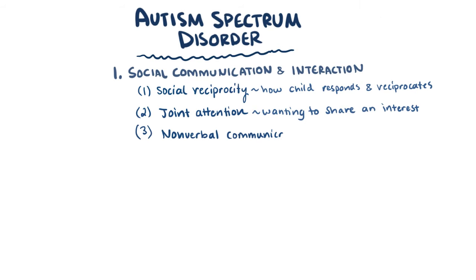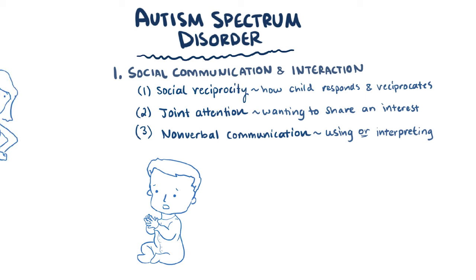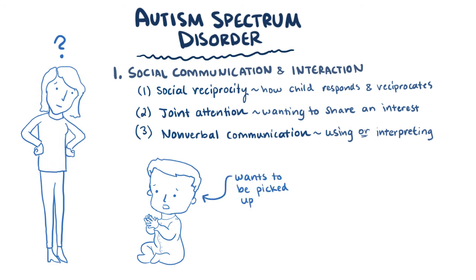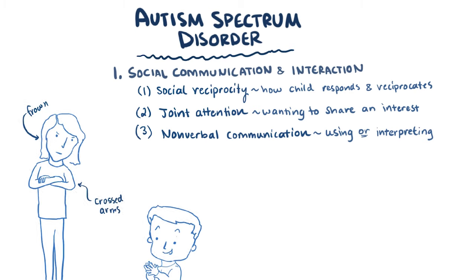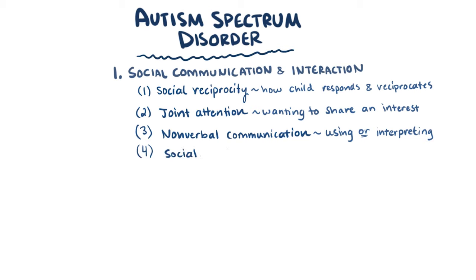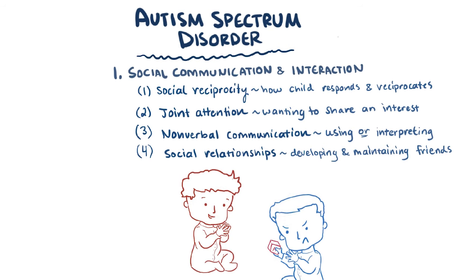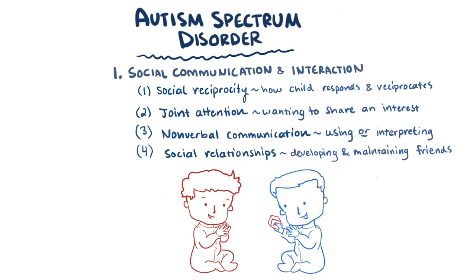Next, there's nonverbal communication, which refers to difficulties either using nonverbal communication themselves or interpreting nonverbal cues from someone else. So maybe the child won't put their arms out when they want to be picked up, or maybe they won't be able to tell when a parent's upset, even if the parent's frowning and crossing their arms. The last subcategory is social relationships — children have trouble developing and maintaining relationships. Maybe the child has a hard time making friends, or they're able to make friends but their behavior tends to drive the friends away.